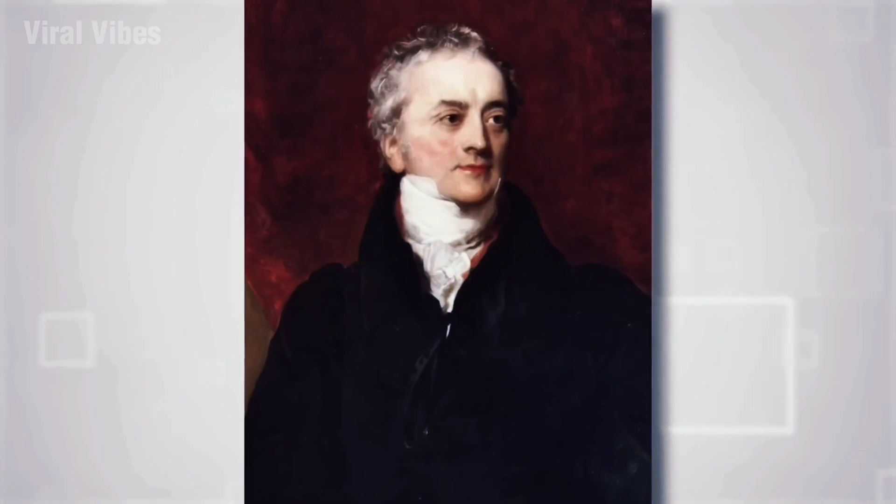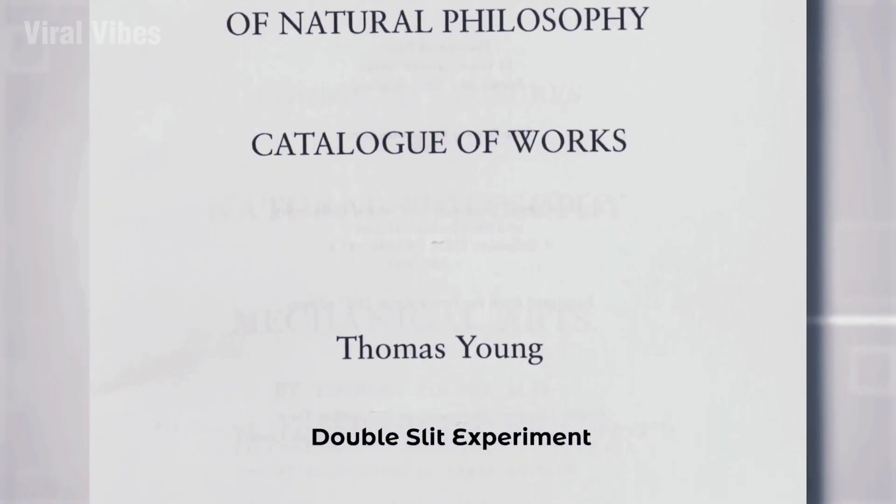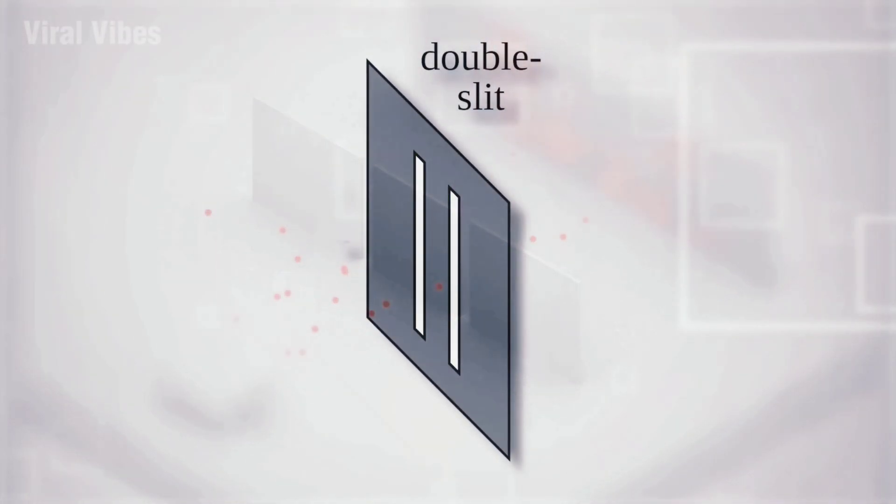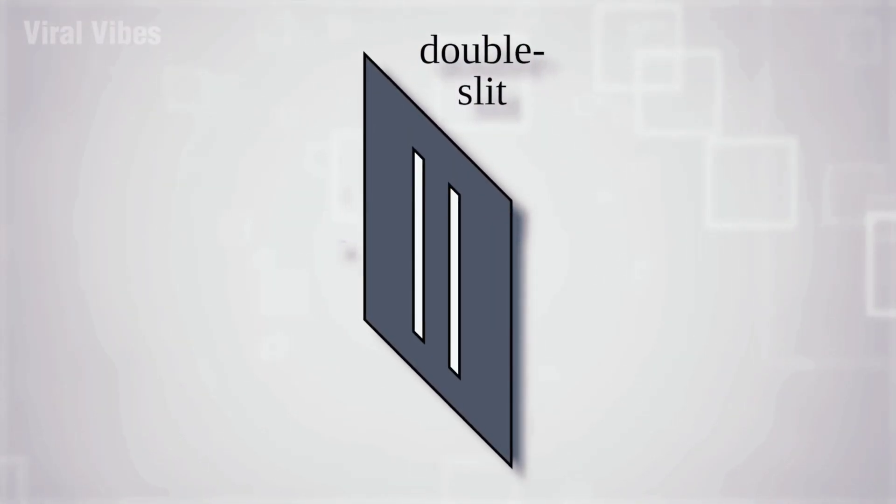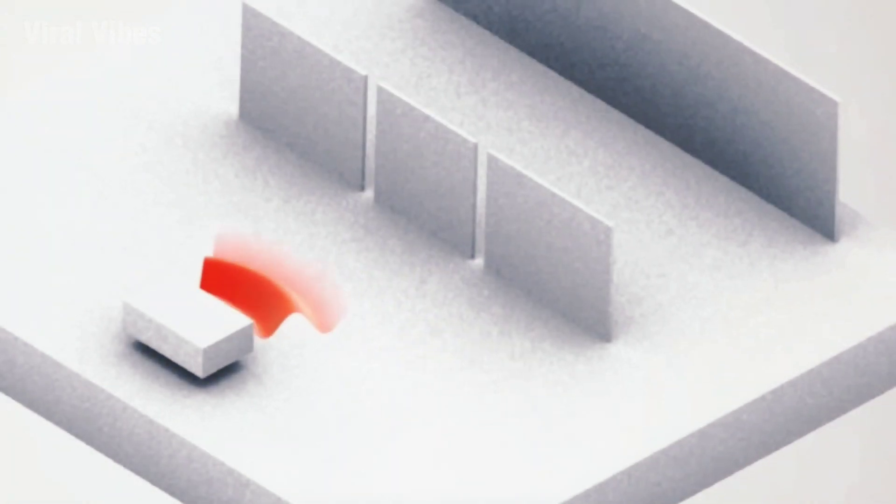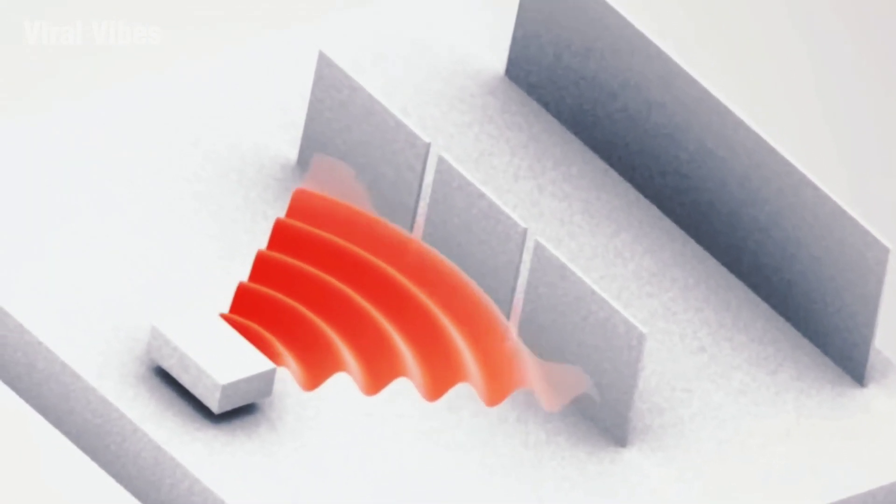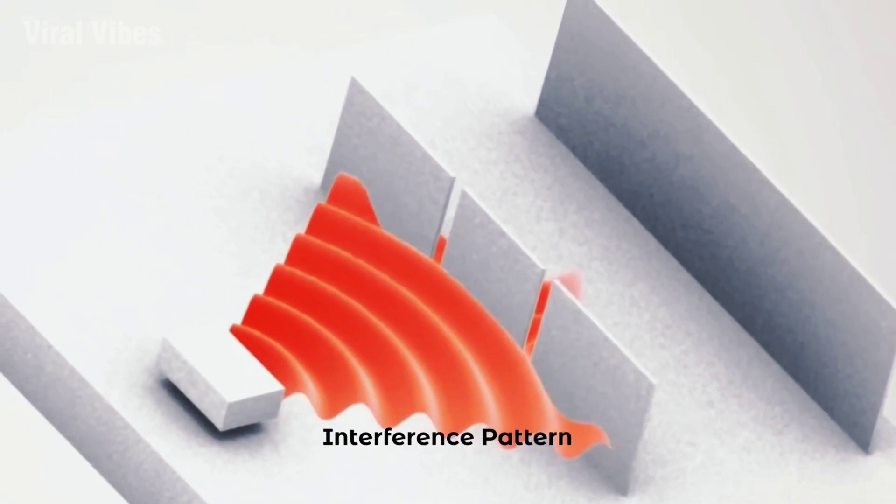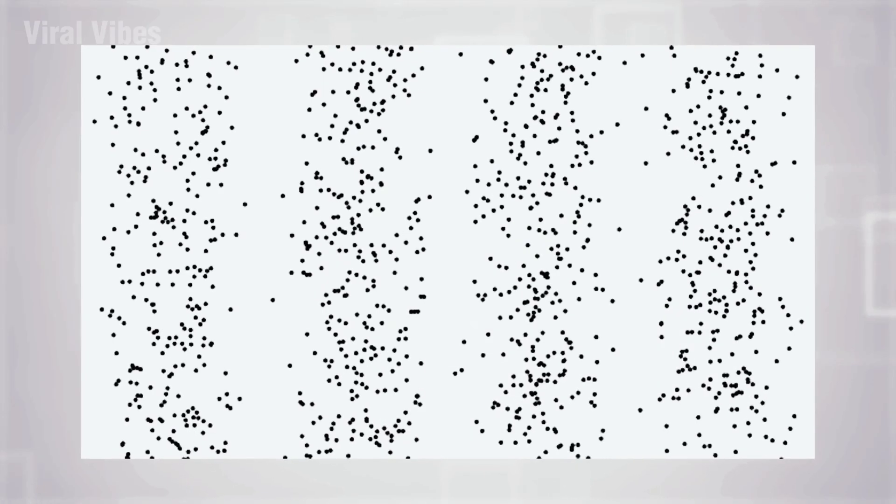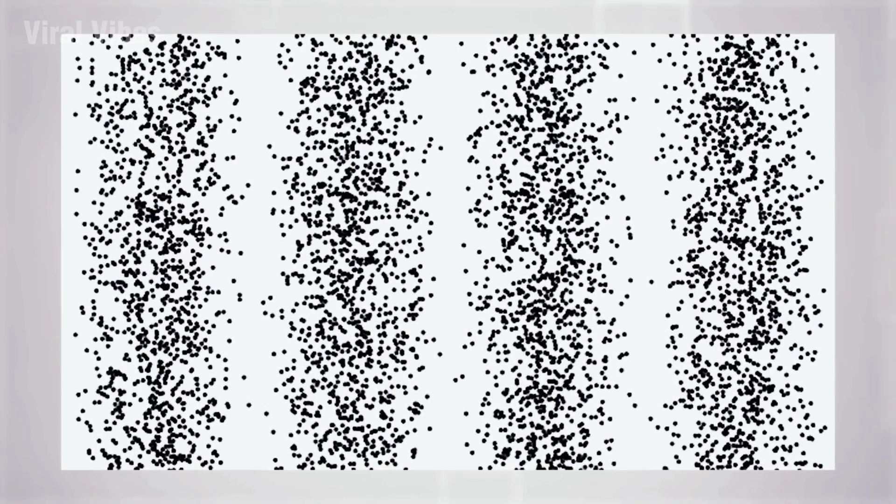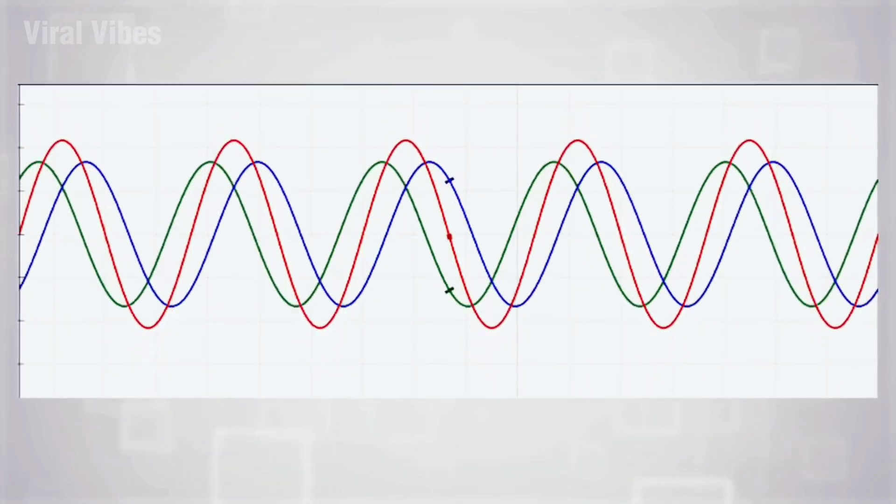The double-slit experiment is a fascinating test in science. It involves shooting tiny particles, like electrons, through two narrow openings in a plate. When we use waves like light or water waves, they create a pattern on a screen showing interference. But here's the mind-boggling part. When we use individual particles like electrons, they still create an interference pattern just like waves. It's like each electron is passing through both slits at the same time.